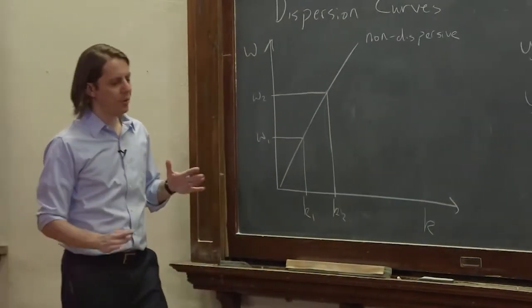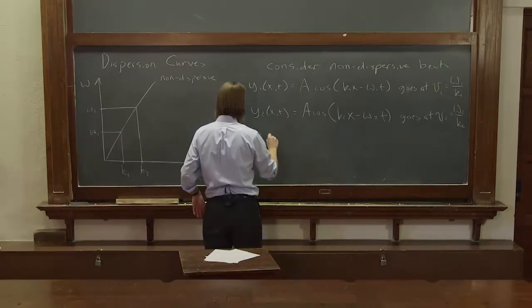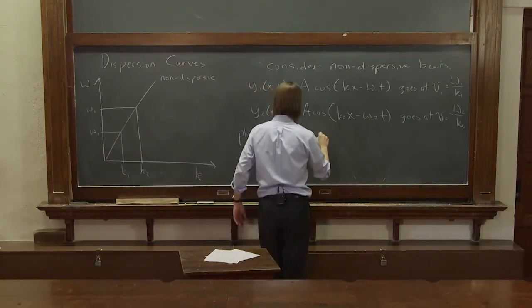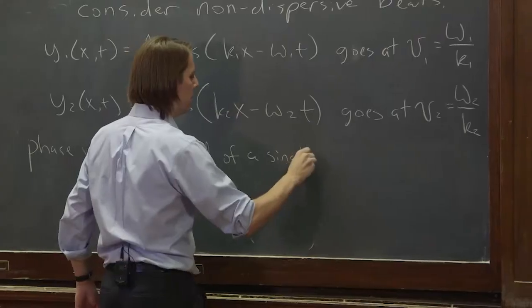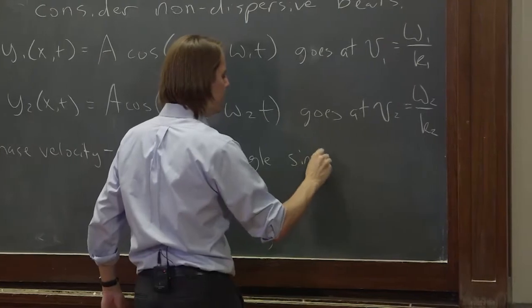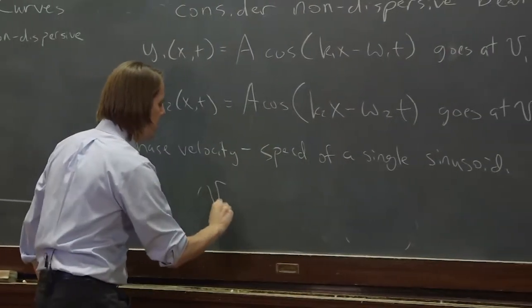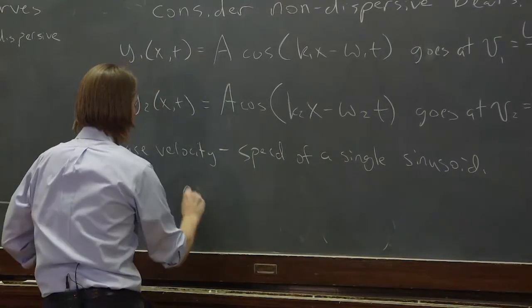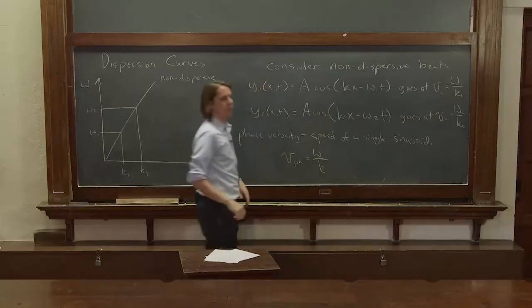So this velocity we call the phase velocity; let's give it a name. It's what we've been saying, the speed of a single sinusoid. Alright, so vₚₕ, it's simply ω over k.